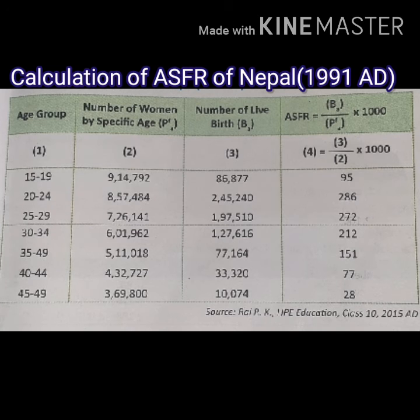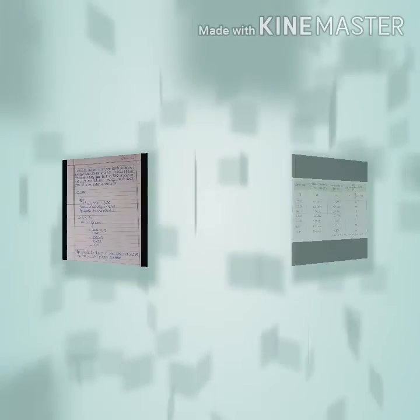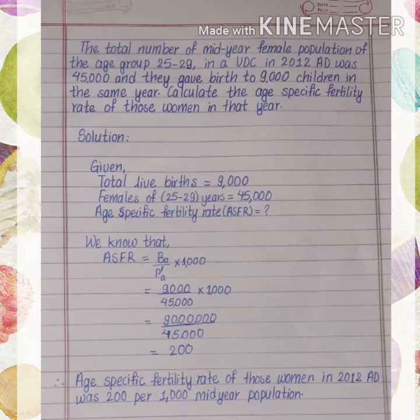Here is the calculation of ASFR of Nepal 1991. Here is one example of the calculation of Age-Specific Fertility Rate.